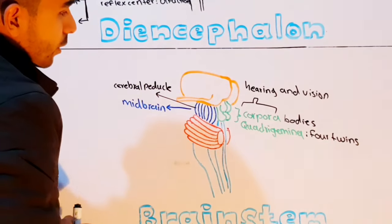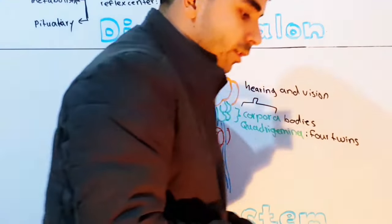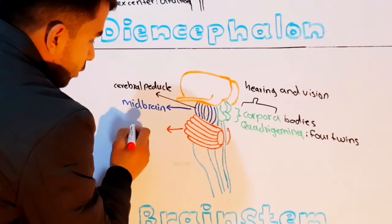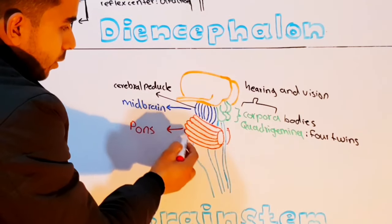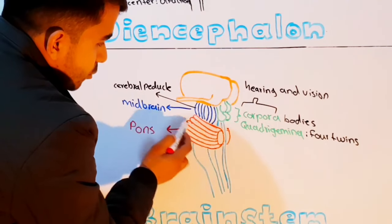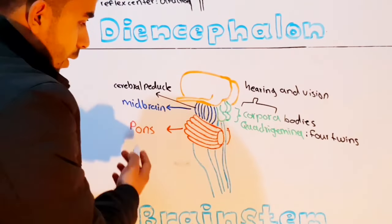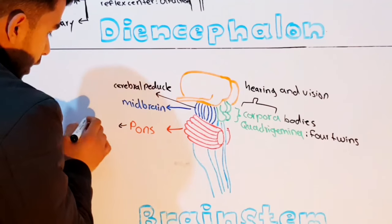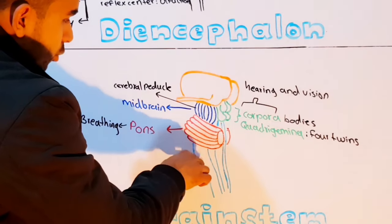Inferior to the midbrain is the pons — this bulging, swollen structure protruding outward. The pons is made mostly of fibers and contains nuclei which are involved in breathing. So the pons is very important for breathing because of these nuclei.